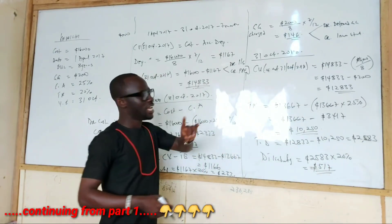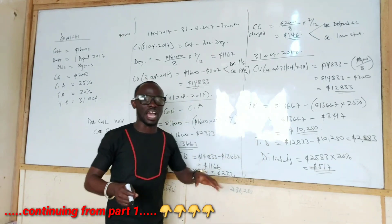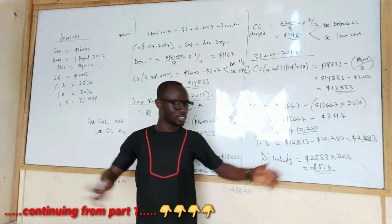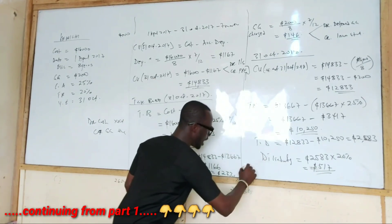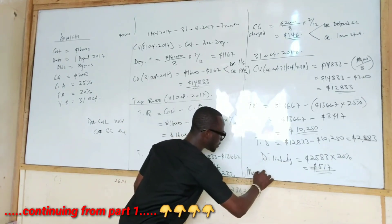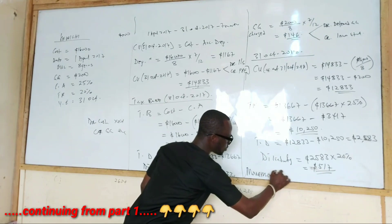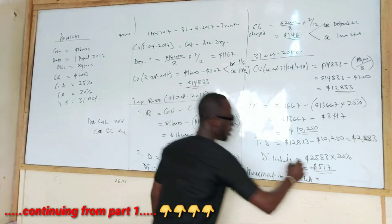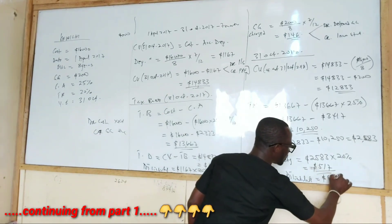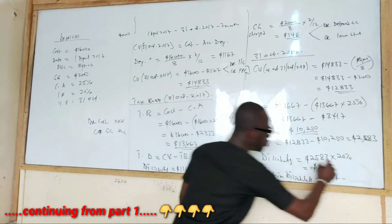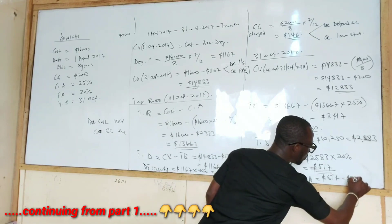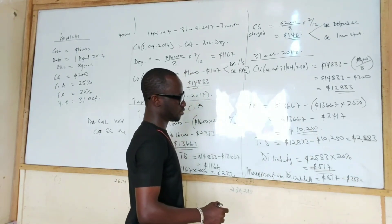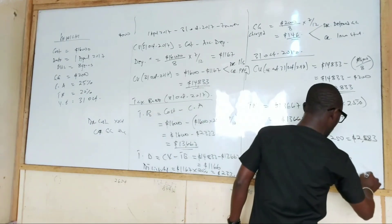Now, this is what I told you — in the second year for the deferred tax, we bring movement in deferred tax. So for the second year, we need to calculate movement in DT liability. And that is going to be the new balance, 517, minus the old 233. What did we get? 284.